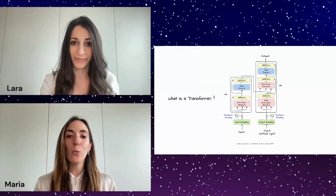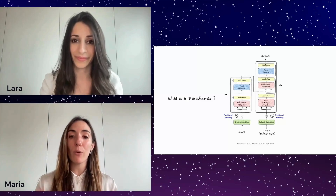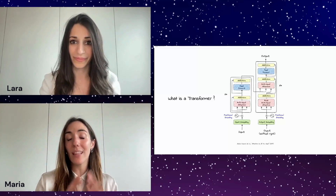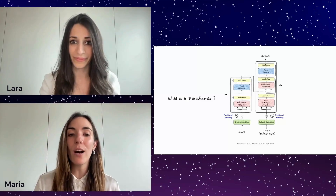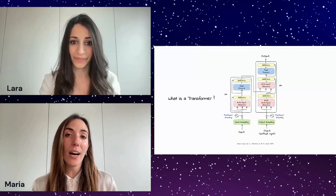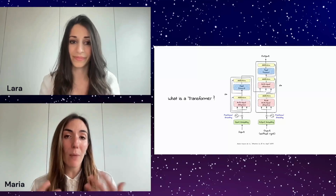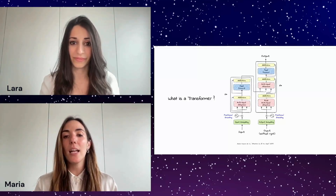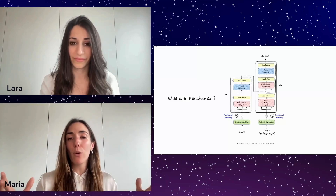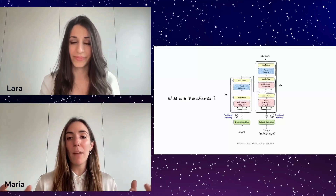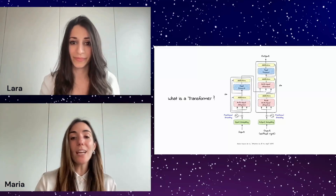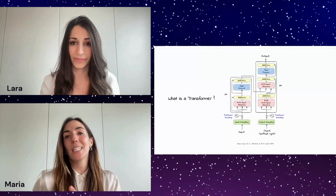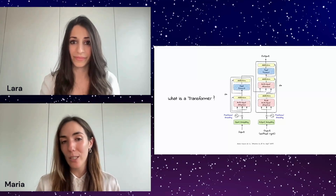The decoder pays attention to the encoded information it has generated so far, making sure that the translation actually makes sense and is accurate. The role of the decoder is mainly to decode the encoded information into something meaningful — that's why it's called a decoder.